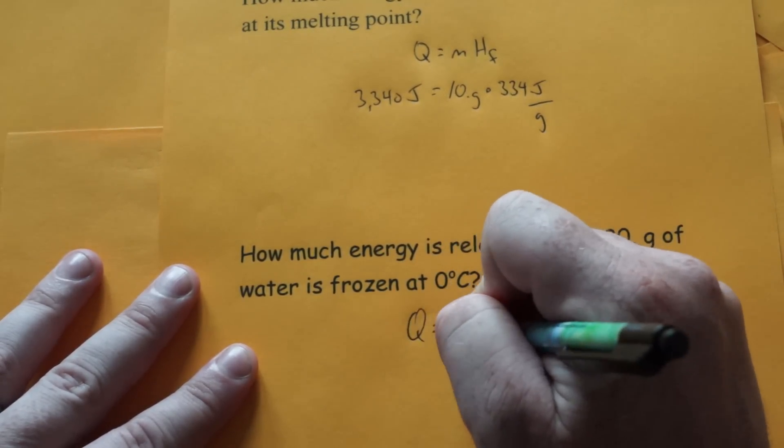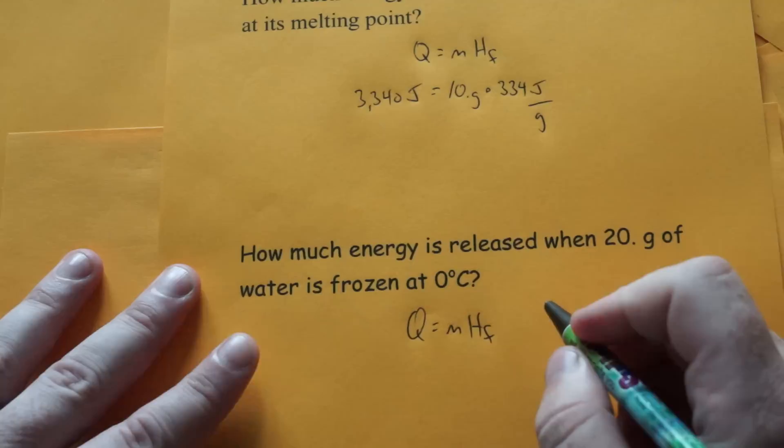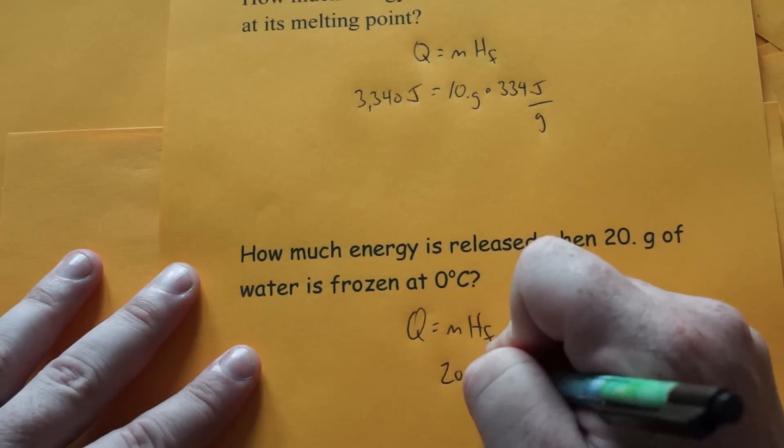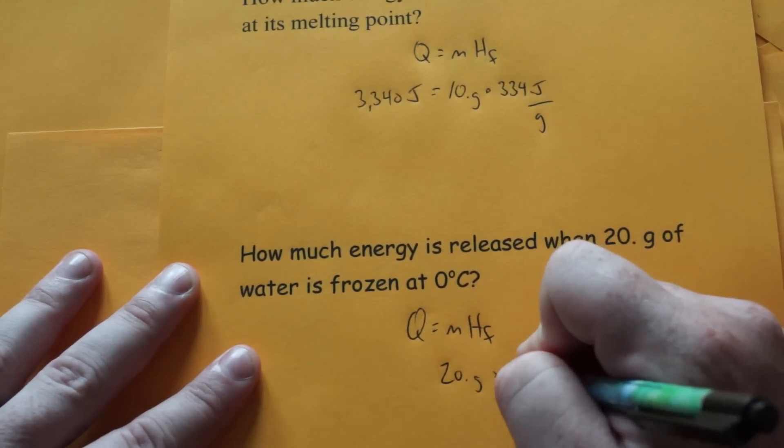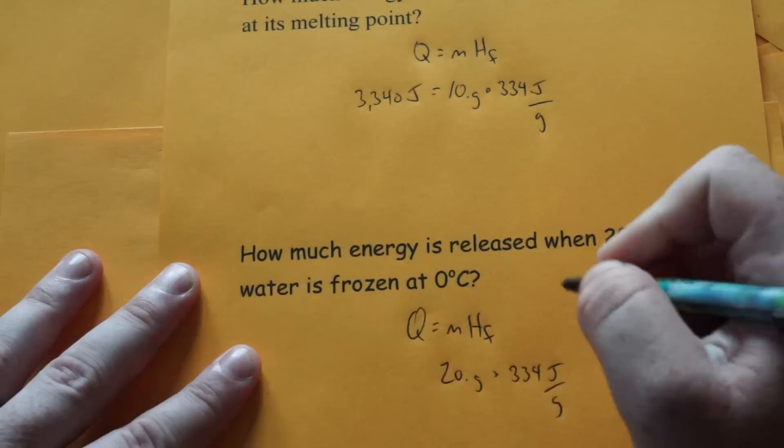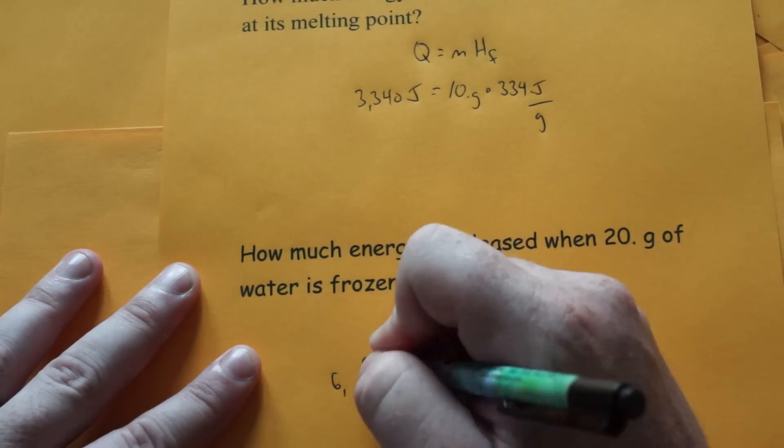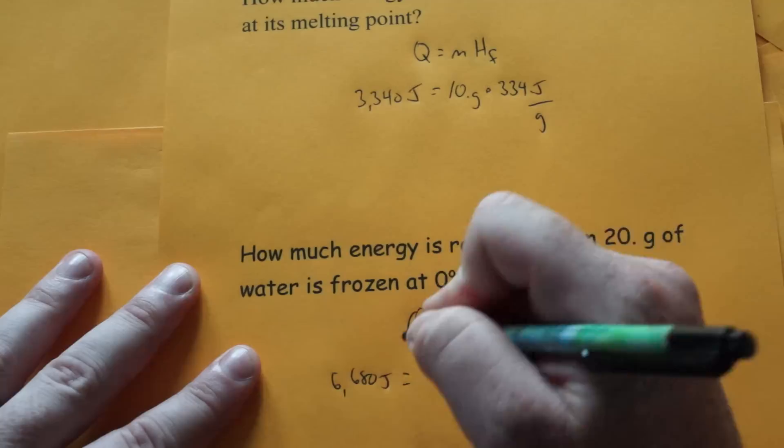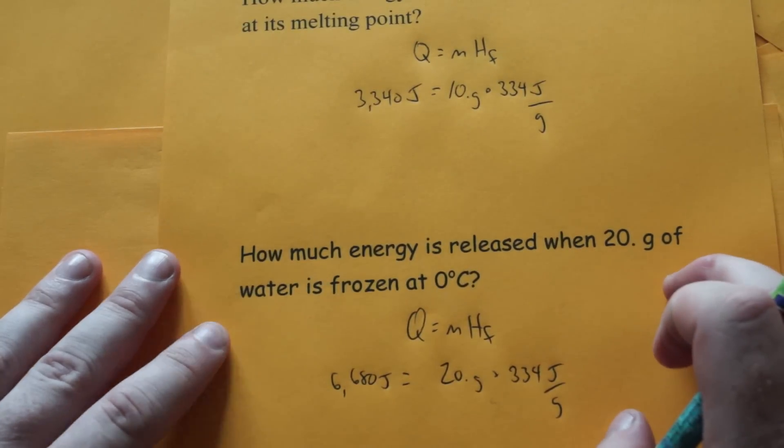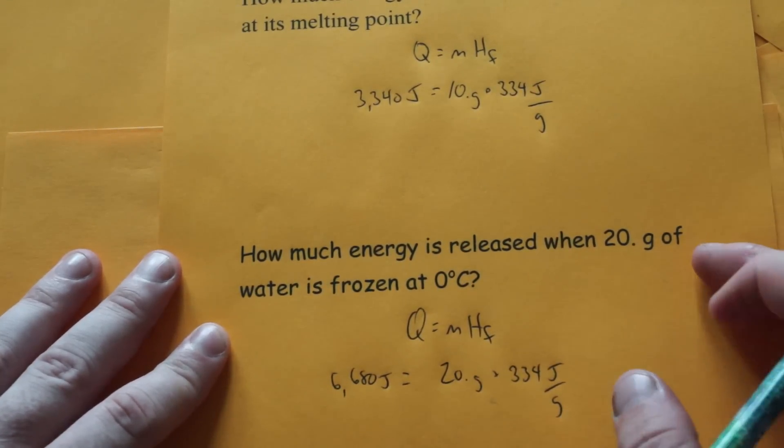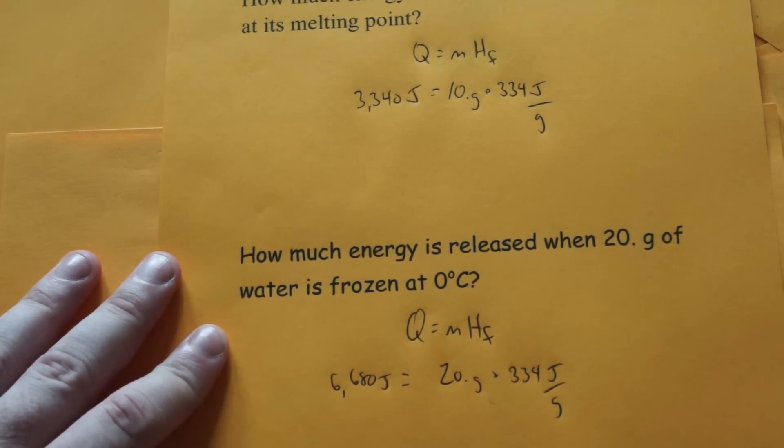Q equals m times H_f. Take 20 grams and multiply by 334 joules per gram, which gives 6,680 joules. That's how much energy is released when water is frozen. And that's how you use the heat of fusion equation.